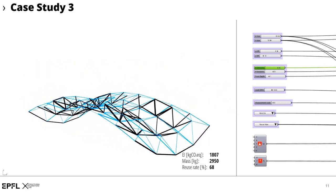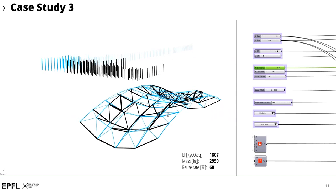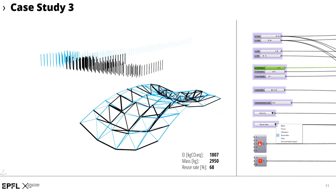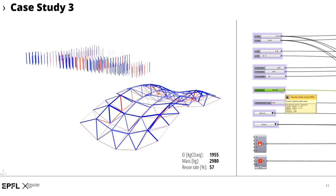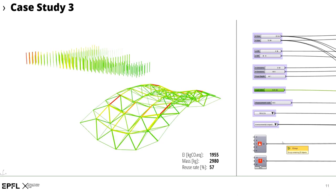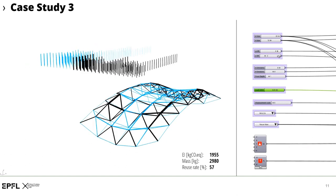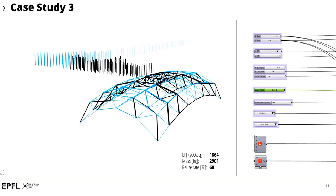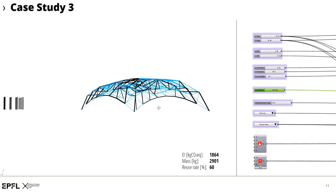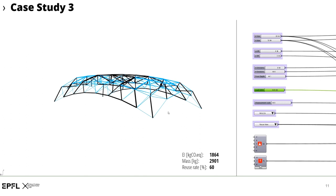The interactive access makes it easy for the user to quickly evaluate different designs. Besides the composition of reused and new elements, we can also check for other outputs — for instance, the distribution of tension and compression forces, or the environmental impact of individual elements in the structure. Besides the visual feedback on the canvas, the user also gets quantitative feedback through various result metrics like the total environmental impact, the total mass, or the reuse rate in the structure.